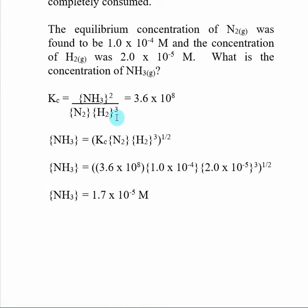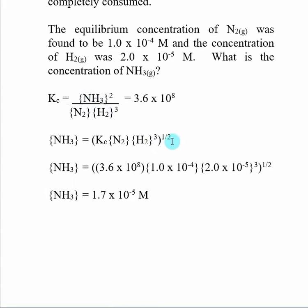Here we're looking for ammonia, so I go ahead and solve my equilibrium expression in terms of ammonia. I multiply both sides by the bottom — N2 and H2 raised to the third — and then I have ammonia squared by itself, so I take the square root of both sides. I then plug these numbers in: it is Kc times the concentration of N2 times the concentration of H2 cubed. Make sure you know how to do that on your calculator — typically it's a function Y to the X. Then once I get the complete calculation, I take the square root, and I get a number.